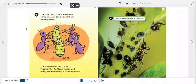No, the aphid is safe. Ants do not eat aphids. Ants drink a sweet liquid made by aphids. Ants and aphids are partners. Together they find food, shelter, and safety. This relationship is called symbiosis.